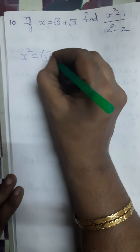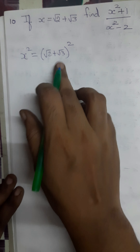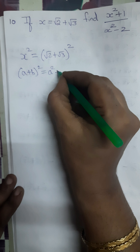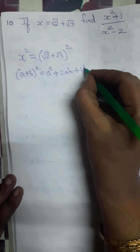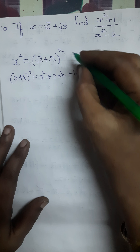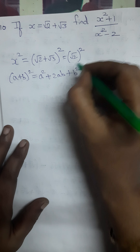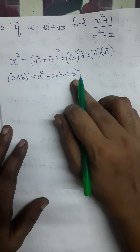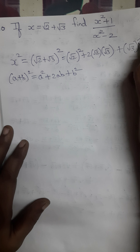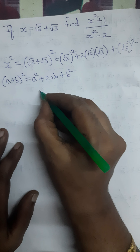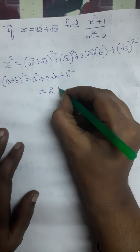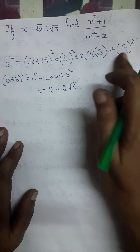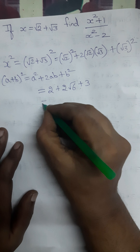x² means (√2 + √3) whole square. Let me expand this using the formula (a + b)² = a² + 2ab + b². So a² means (√2)² plus 2ab that is 2 into √2 into √3, plus b² means (√3)². Simplifying: (√2)² is 2, 2·√2·√3 = 2√6, and (√3)² is 3.